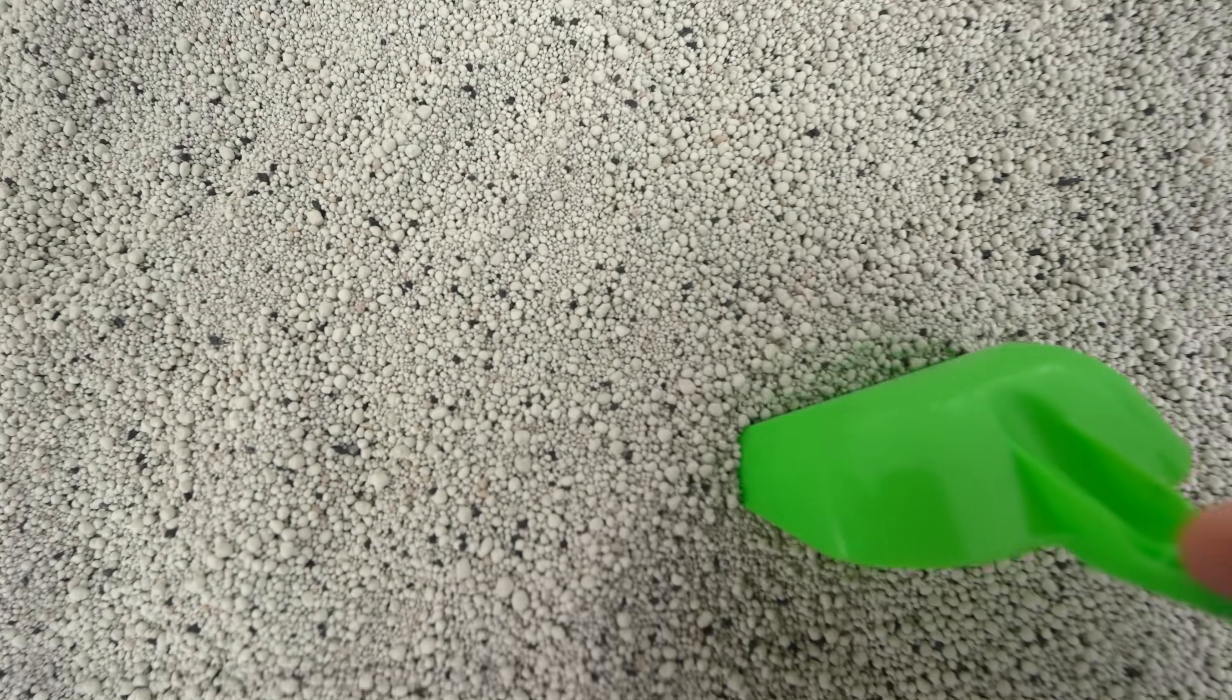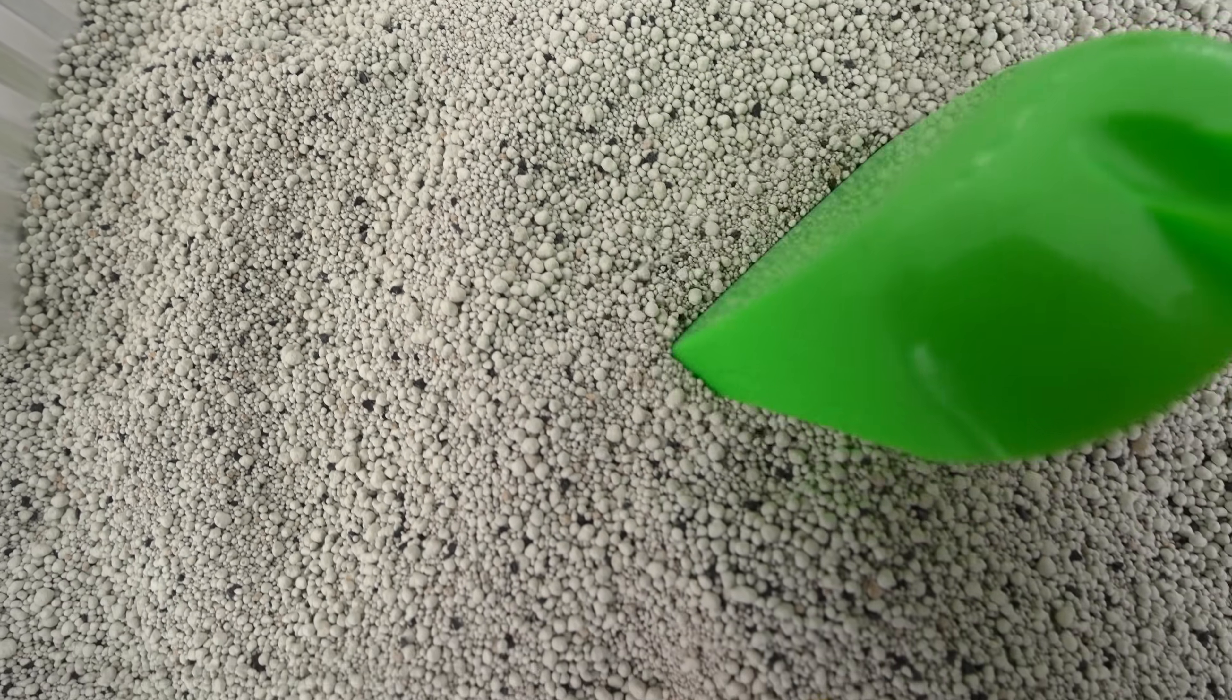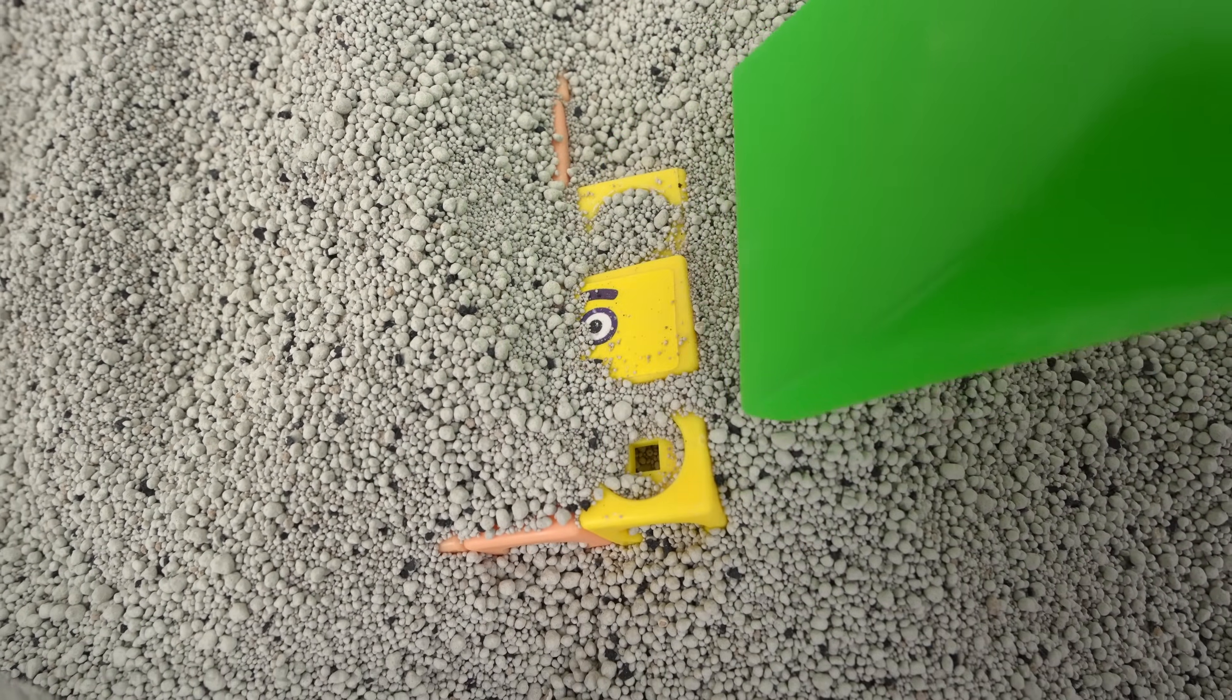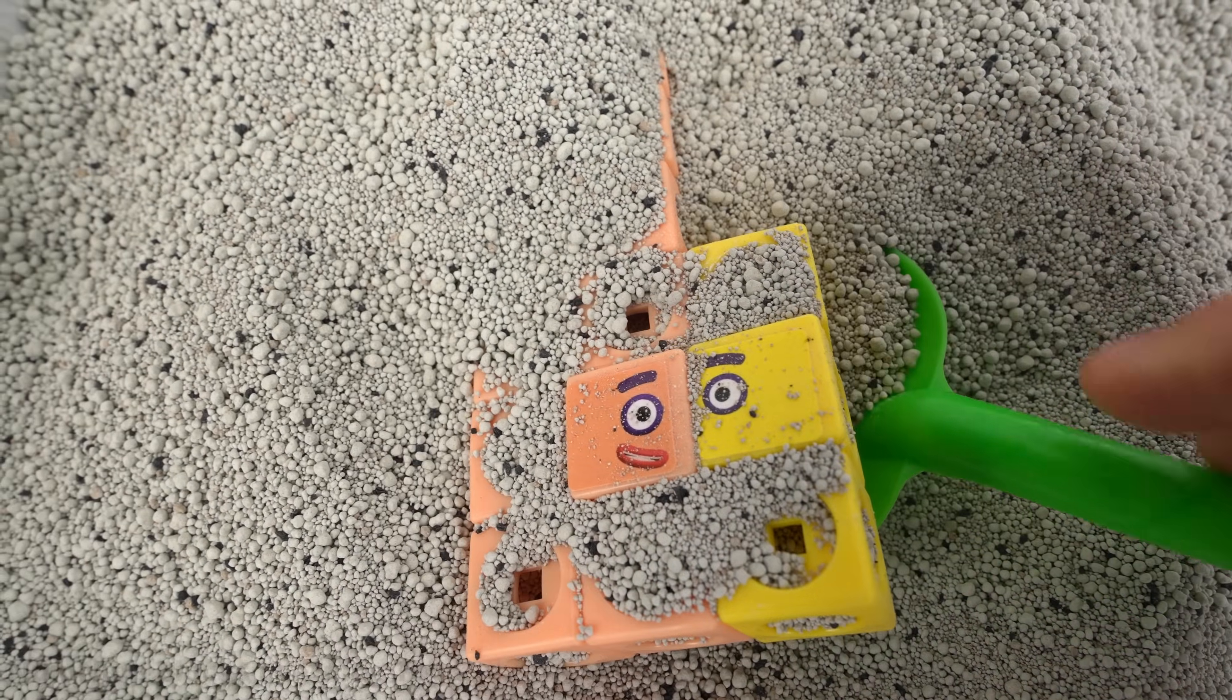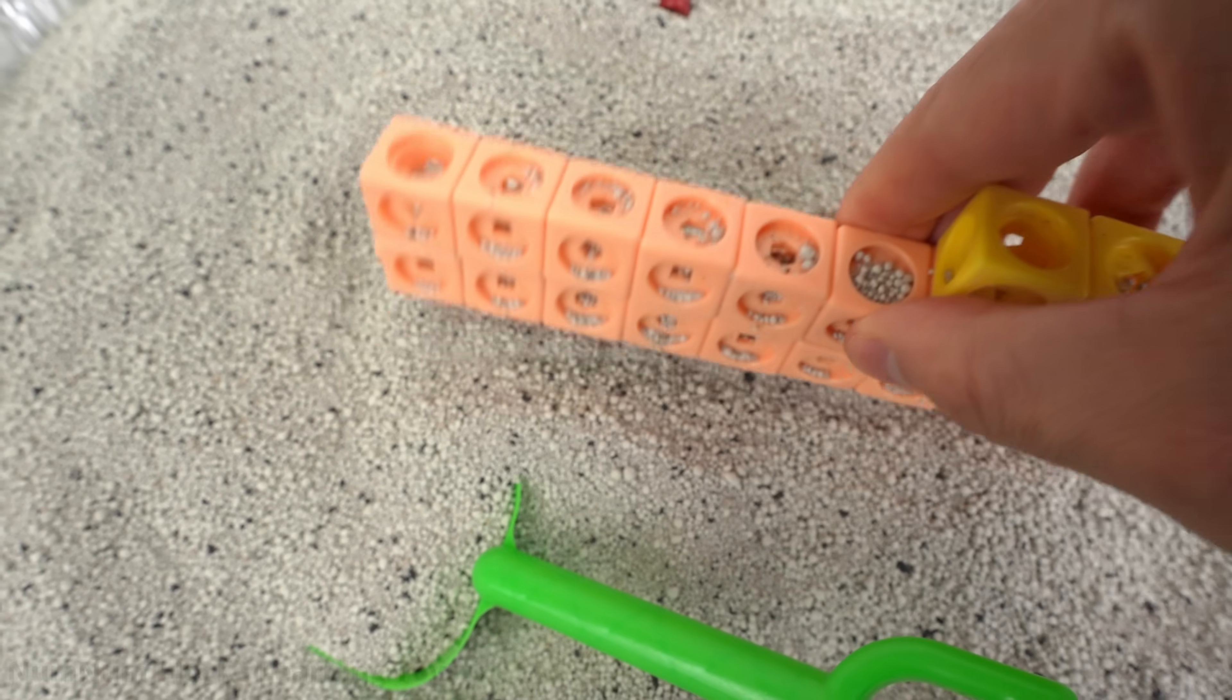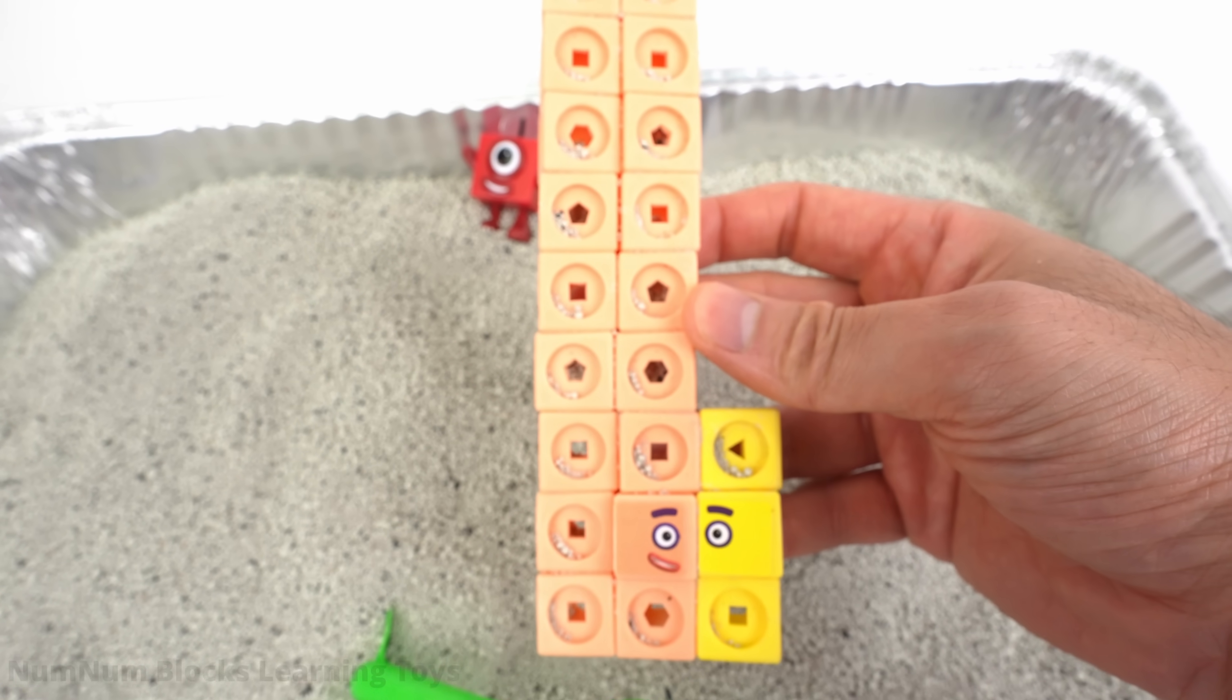Hmm, nothing over here. Do you hear that? We found another number block. Look, yellow blocks. Do you know the number block that has yellow blocks? It's number 23. I'm 23.